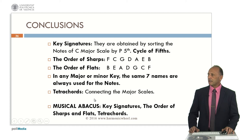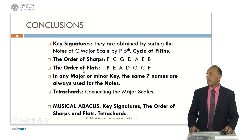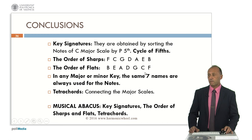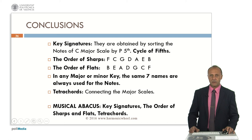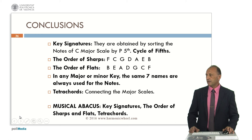As conclusions: the key signatures are obtained by sorting the notes of the C major scale by perfect fifths, which leads us to the cycle of fifths. The order of sharps is F-C-G-D-A-E-B, following a sequence of perfect fifths, and the order of flats is similar but by perfect fourths: B-E-A-D-G-C-F. In any major or minor key, the same seven names are always used for the notes; the only difference is that some of them may be sharp or flat. The tetrachords can be used for connecting the major scales. The musical abacus includes the key signatures, the order of sharps and flats, and the tetrachords. You can find all the information on the website harmonicwheel.com. Thank you very much for your attention.